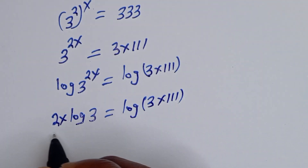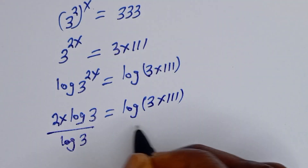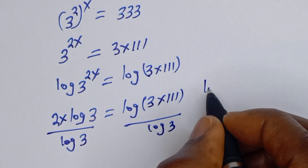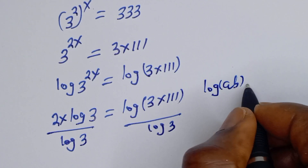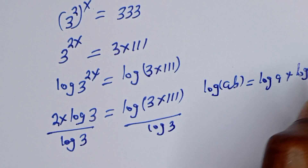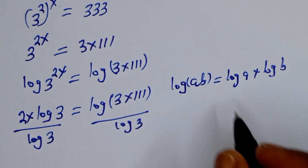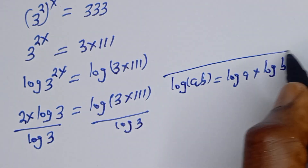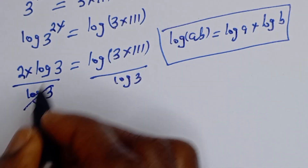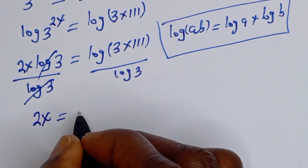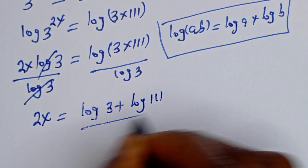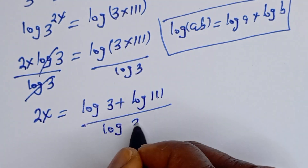Now let's divide both sides by log 3. Take note that log AB is equal to log A plus log B. After cancellation, we have 2S is equal to log 3 plus log 111, all over log 3.